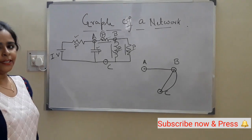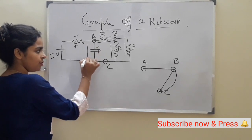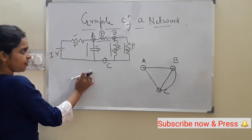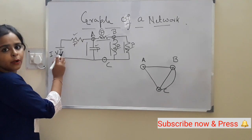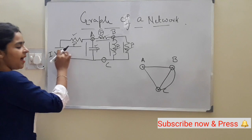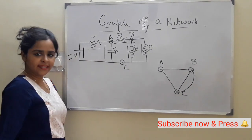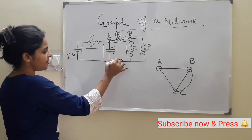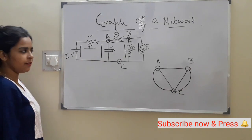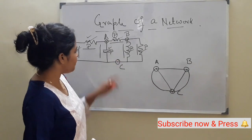Between A and C there are two branches. One contains a capacitor, which is a passive element, so it will be represented by a line segment. Another branch between A and C contains a resistor and an ideal voltage source. The resistor is a passive element represented by a line segment, and the ideal voltage source is represented by a short circuit. So this branch between A and C containing the resistor and ideal voltage source is also represented as a line segment. No more elements remain in the network.